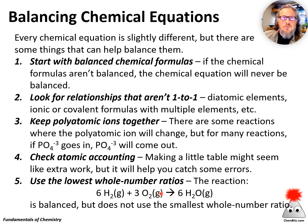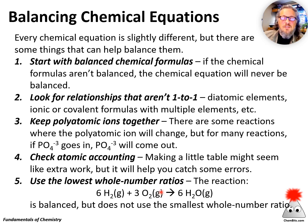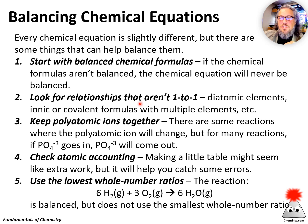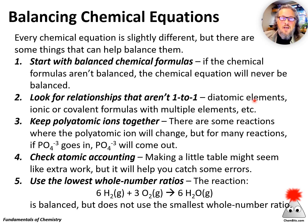A few things to help us get started balancing chemical equations. First of all, we have to start with balanced chemical formulas, because if we don't have correct chemical formulas, we're never going to have a balanced chemical equation. Another helpful thing: look for relationships that aren't one-to-one. As we saw in the last example, diatomic elements always come in pairs, so if we don't have an even number of the diatomic element on the other side of the equation, we're probably going to have to do some adjusting.